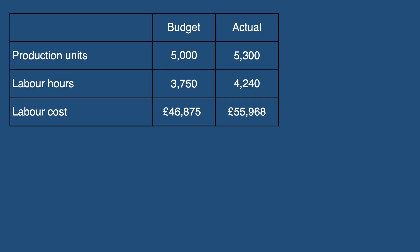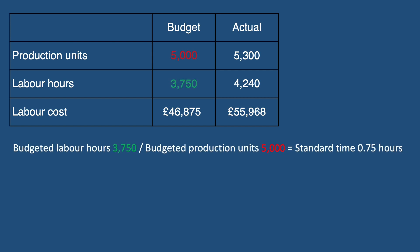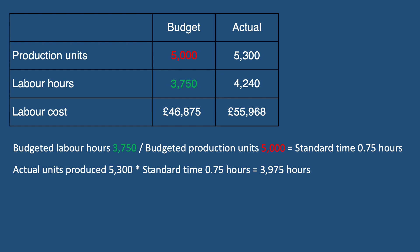Moving on to the labour efficiency variance, which measures whether the business used more or less hours than expected to produce the number of units they did. Using our previous example, we first determine the standard labour hours per unit: budgeted labour hours of 3,750 divided by budgeted production of 5,000 units gives 0.75 hours, i.e. 45 minutes per unit. We then apply this to actual production — 5,300 units multiplied by 0.75 gives 3,975 hours, which is how many hours should have been used. We compare this to the actual hours used of 4,240.